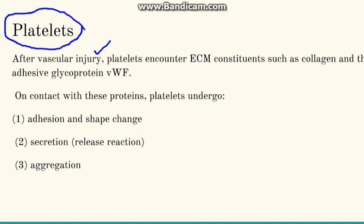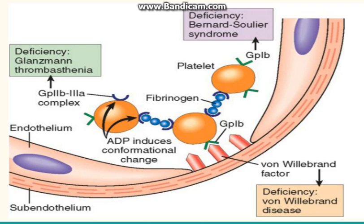When we discuss platelets, we understand how the primary hemostatic plug is formed. After vascular injury, the extracellular matrix gets exposed and von Willebrand factor present there is exposed. The platelets undergo adhesion — the platelet's glycoprotein Ib interacts with von Willebrand factor, and this step is known as adhesion.